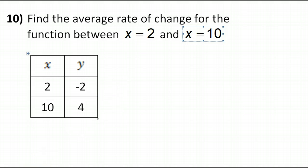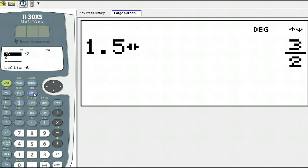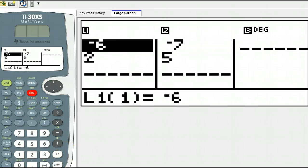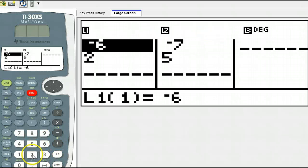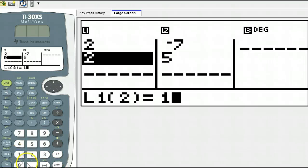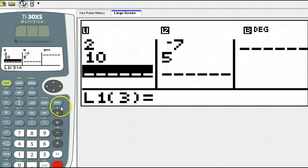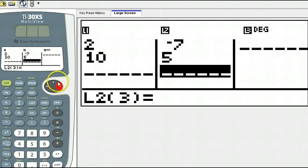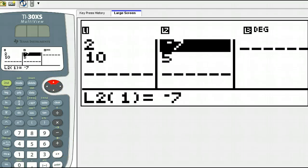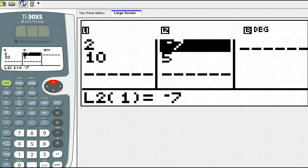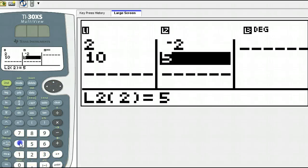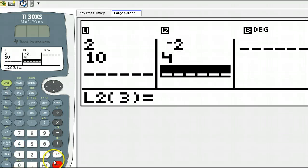So once again, if you just go to the table of your calculator, and we're just going to type in for x values, 2 and 10. So there's 2, ENTER, 10, ENTER, so there's 2 and 10. Arrow over to the y values, I'll just type over these. The y values are negative 2 and 4, so there's negative 2, ENTER, 4, ENTER.